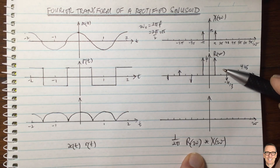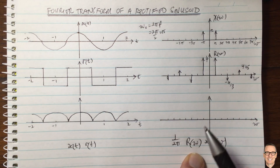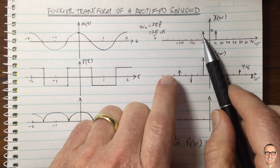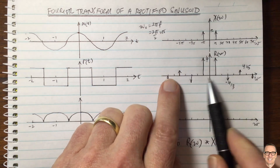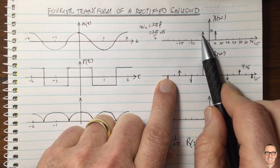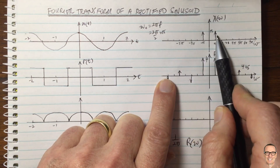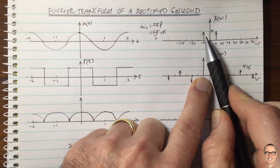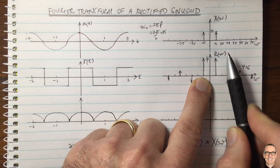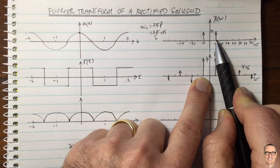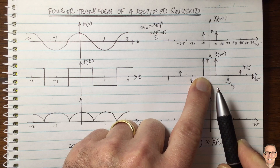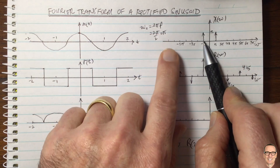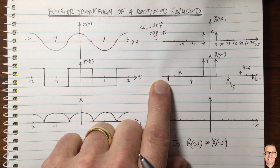There are videos on the channel about convolution, in particular convolution with delta functions. When you convolve with a delta function, you take your function and shift it to the location of the delta. So here we're going to convolve X(omega) with R(omega), which has two delta functions. We take the zero of our function and place it over each delta function location — once over the left delta and once over the right delta — then add the two up, multiplying by the amplitudes.